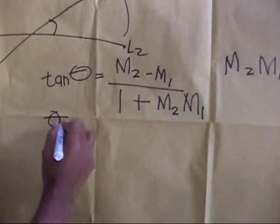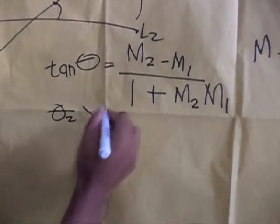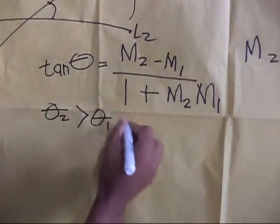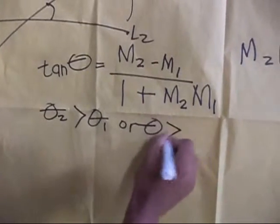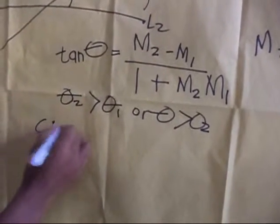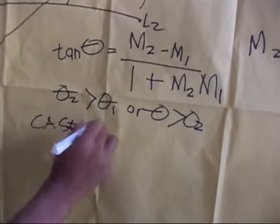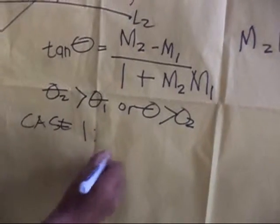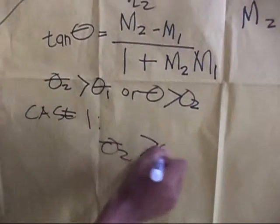Since either theta 2 is greater than theta 1, or theta 1 is greater than theta 2, we present these cases for our proof. This is case 1: theta 2 is greater than theta 1.